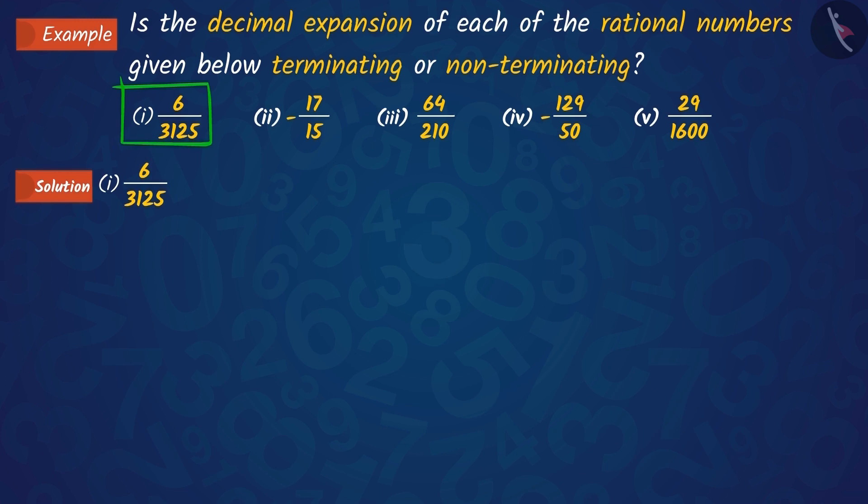If we factorize both the numerator and denominator of this first rational number, we find that the denominator is in the form of 2 raised to n into 5 raised to m.